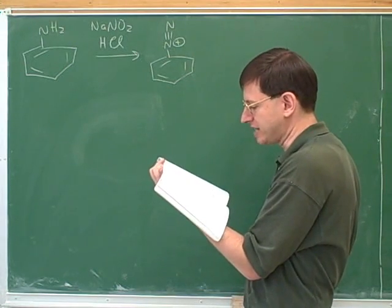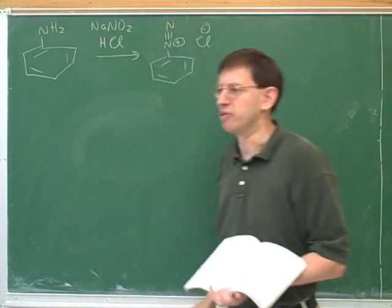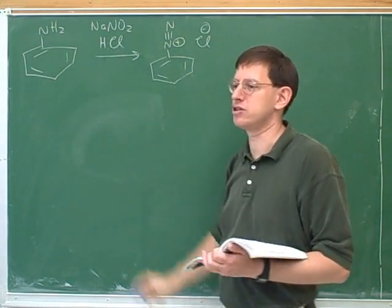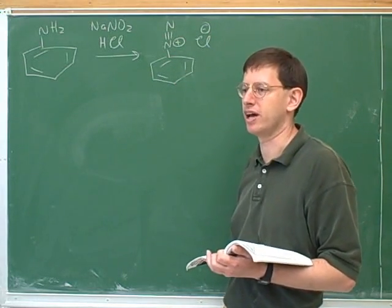So this is how we make a diazonium salt. Now, actually, it would make it like this because the counter ion would be the chloride from the hydrochloric acid. So this is usually referred to as a diazonium salt. Salt is just another name for an ionic compound.